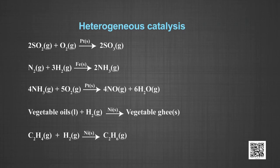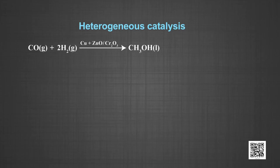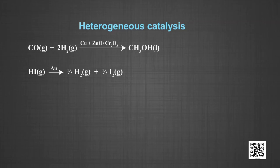Number five: conversion of ethene to ethane in the presence of platinum, palladium or nickel — the process of hydrogenation. The reactant is in the gaseous phase and the catalyst is in the solid phase. Number six: carbon monoxide and hydrogen react to give methyl alcohol in the presence of copper and zinc oxide as catalyst and chromic oxide as promoter — the reactants are gases and the catalyst and promoter are solids. Number seven: decomposition of hydrogen iodide on gold catalyst to produce hydrogen and iodine — the catalyst gold is in the solid form and the reactant is in the gaseous form.